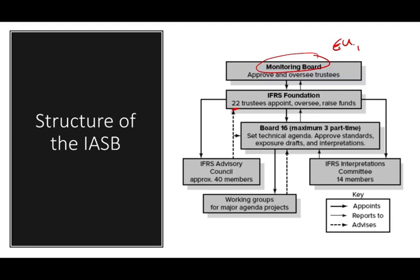The composition is a balance of professional backgrounds including auditing, users of financial statements, preparers of financial statements, academicians, as well as other officials serving the public interest. You need this diversity because remember one of the complaints against the IASC was that they were mostly self-appointed accountants. That's why you would see that diversity.